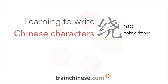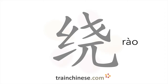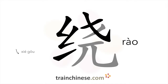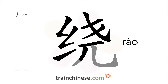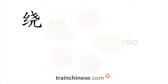Welcome to this Train Chinese character video. This one has nine strokes. Let's look at how this character breaks down. This character contains the radical silk.